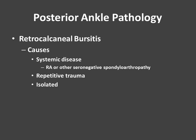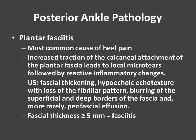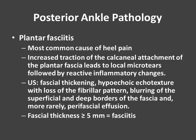Lastly, we can see retrocalcaneal bursitis. Common causes include systemic disease from rheumatoid arthritis or seronegative spondyloarthropathy, trauma, repetitive trauma, or it can be isolated. Here's an image from Bianchi and Martinoli's book showing hypoechoic fluid in the retrocalcaneal bursa with inflammatory change. We can also see plantar fasciitis, the most common cause of heel pain, resulting from increased traction at the calcaneal attachment leading to micro tears followed by reactive inflammatory changes. On ultrasound, you'll see fascial thickening, hypoechoic echotexture with loss of the fibrillar pattern, and blurring of the superficial and deep borders of the fascia — becoming greater than 5 millimeters thick. Here are two different patients: one with a markedly thickened plantar fascia, and then a more normal-appearing one.